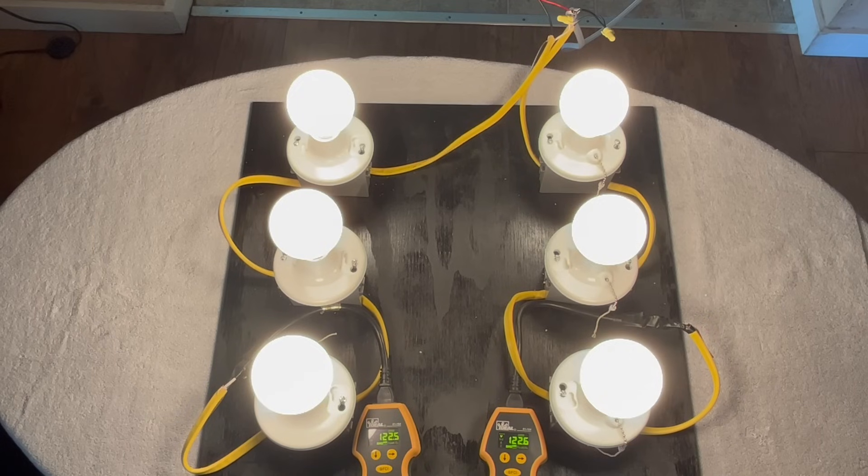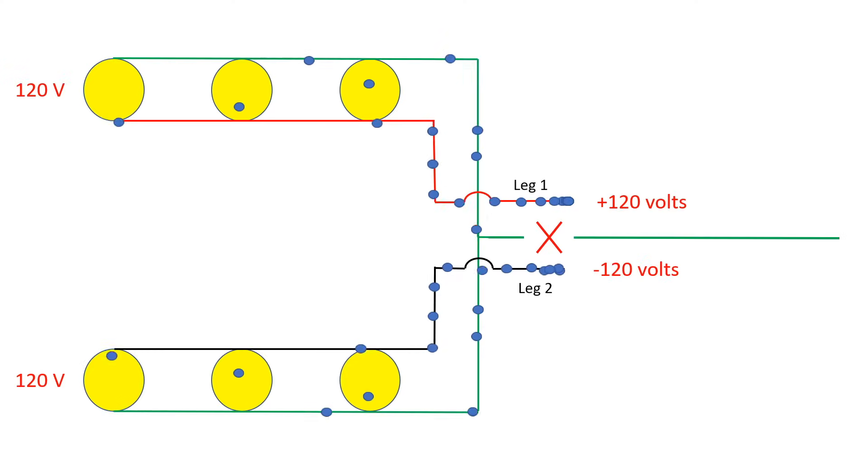Now let's talk about a lost neutral. I'm going to show it on this light board, but first let's go back to the animation so you can see what's happening. Look at the neutral wire. You can see that I've simulated it being broken. It has the red X.